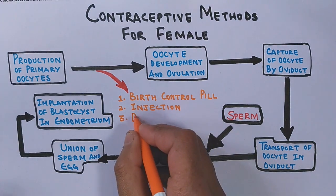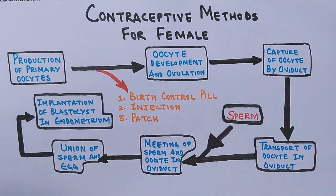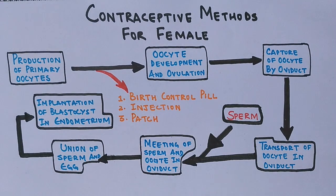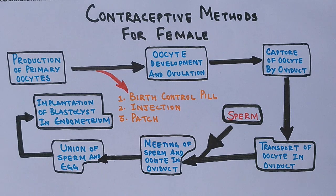Then we have a contraceptive patch. The contraceptive patch is a small patch that you stick onto the skin that releases estrogen and progesterone. It also stops ovulation.